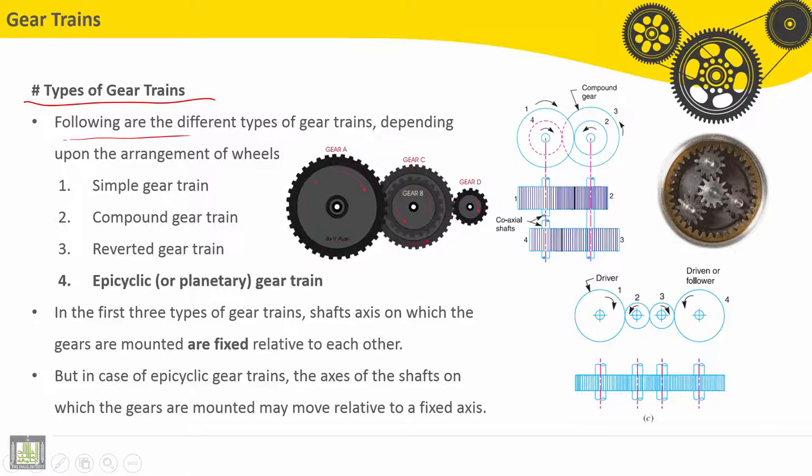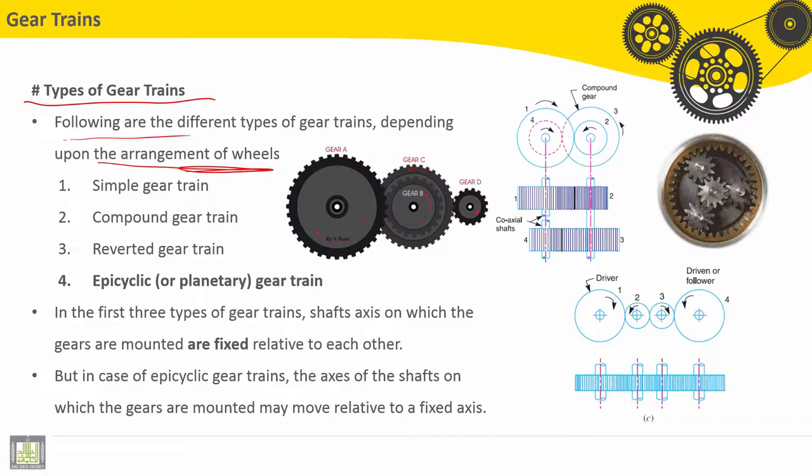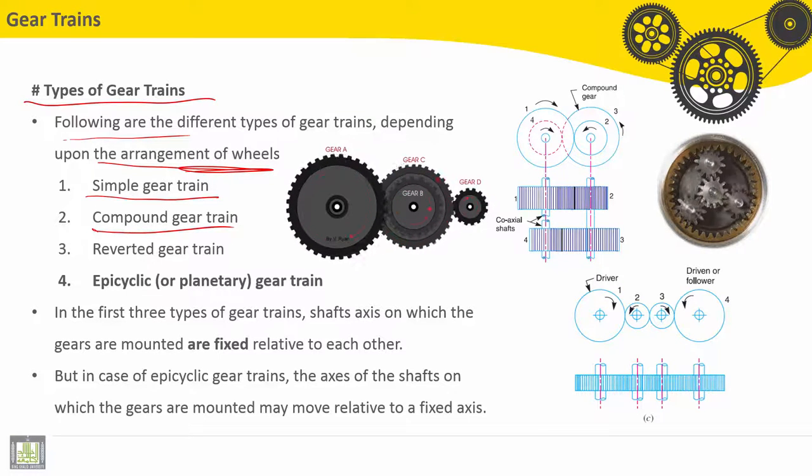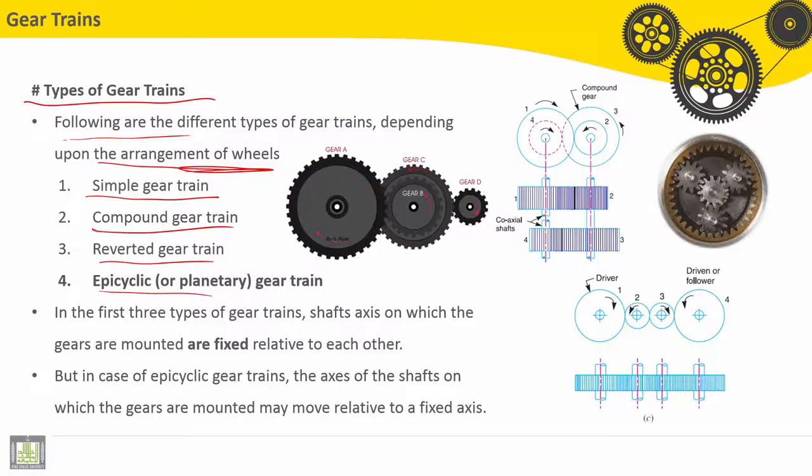Following we have the different types of gear trains depending on the arrangement of wheels. First one is called simple gear train. Second one is the compound gear train. Third one is the reverted gear train. Finally, epicyclic or planetary gear train.